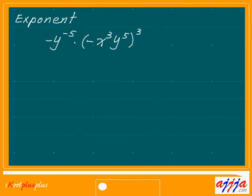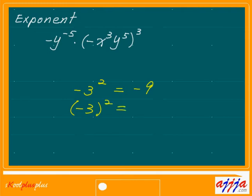You have to be careful on this one. A lot of times I ask a student: what is negative 3 to the second power? Usually they say 9 — which is not correct. Because this negative does not belong to the base. So the answer is negative 9. But this one is a different case: negative 3 in parentheses, then squared — that's going to be positive 9. Negative times negative is positive, that's why.